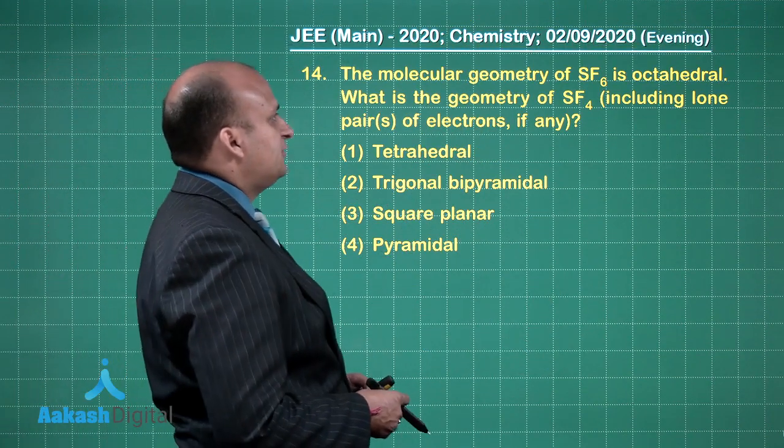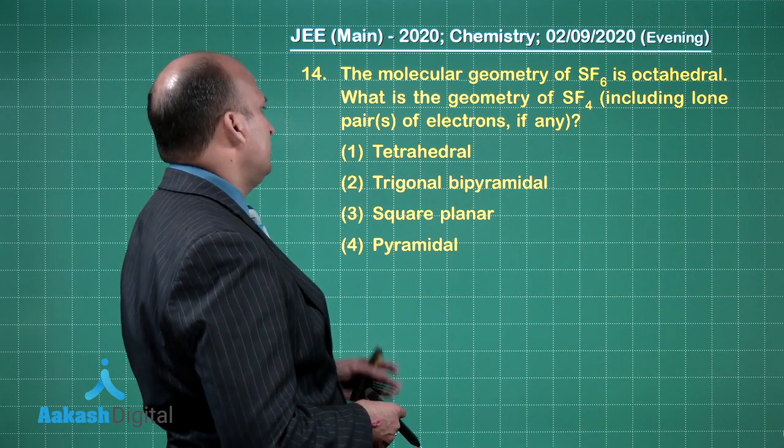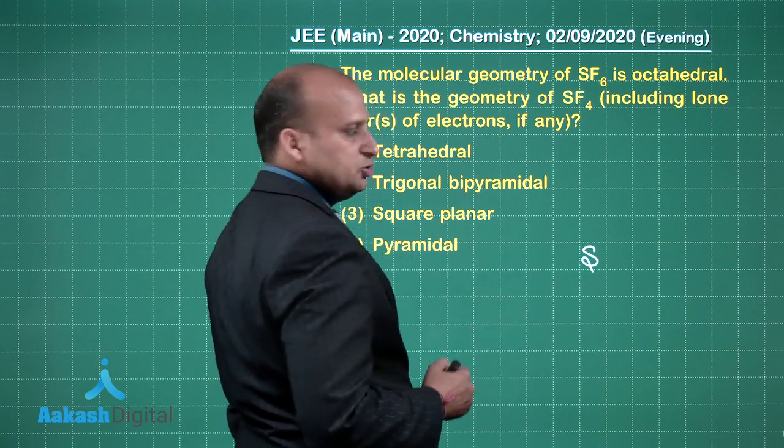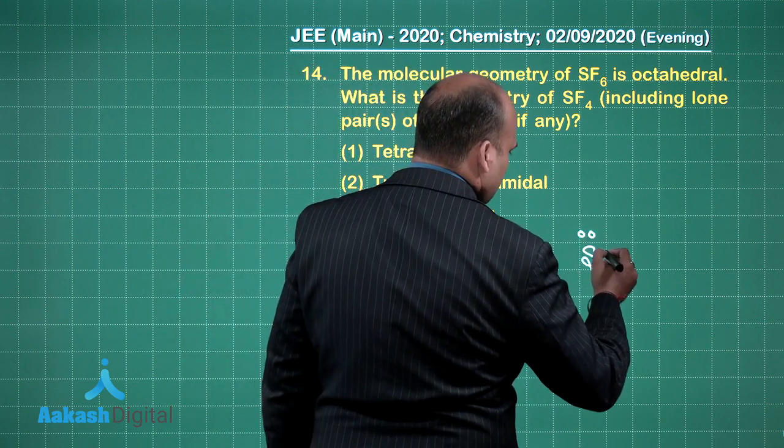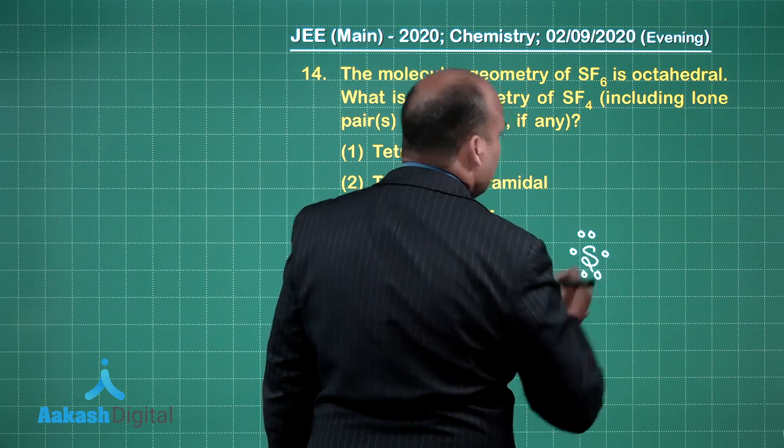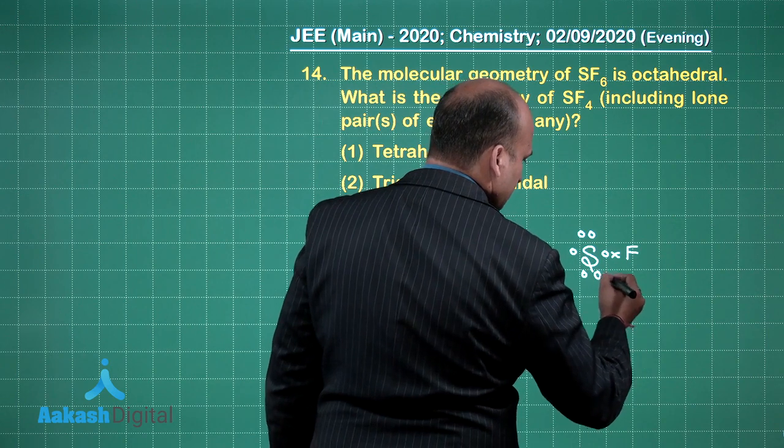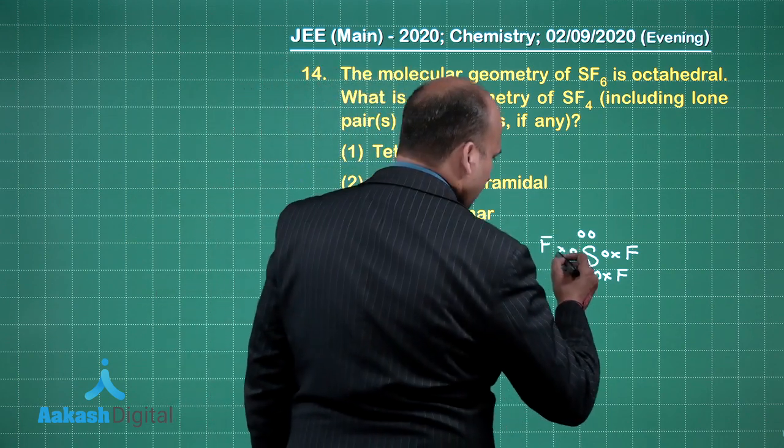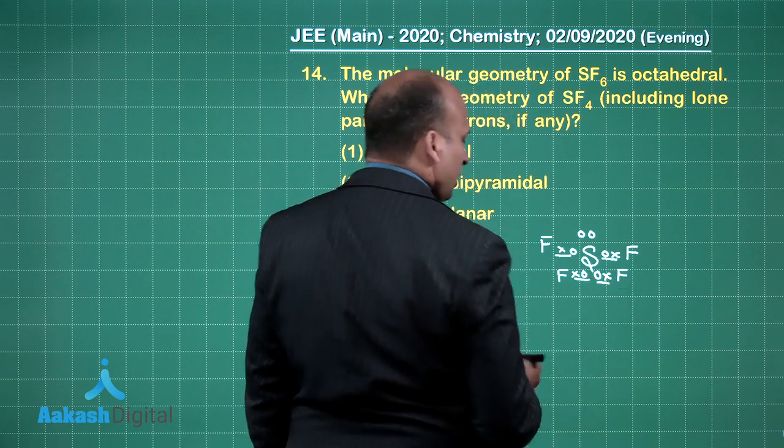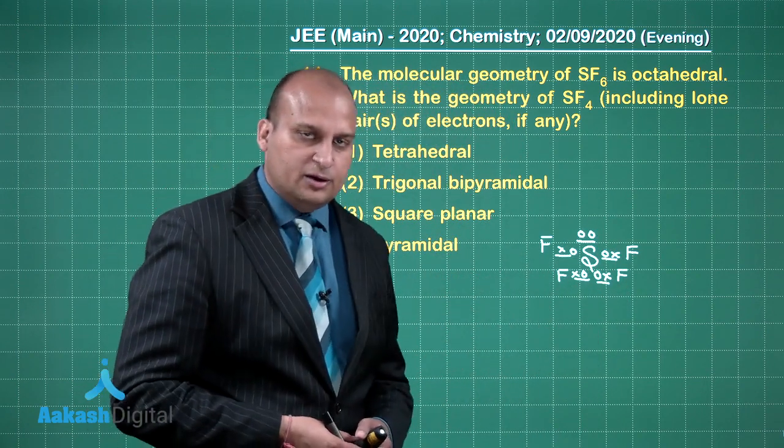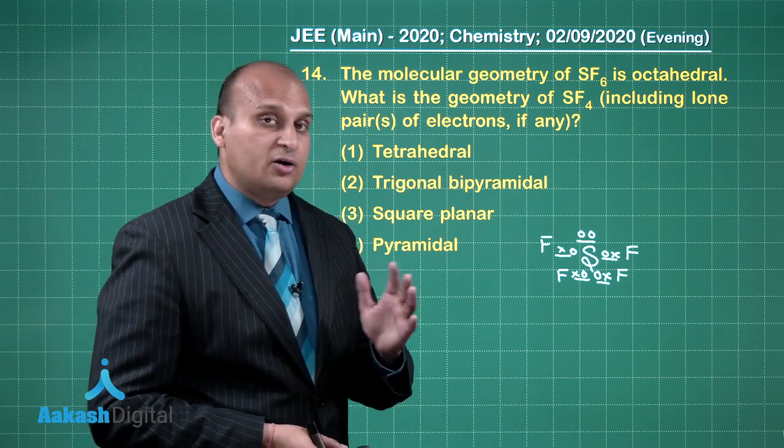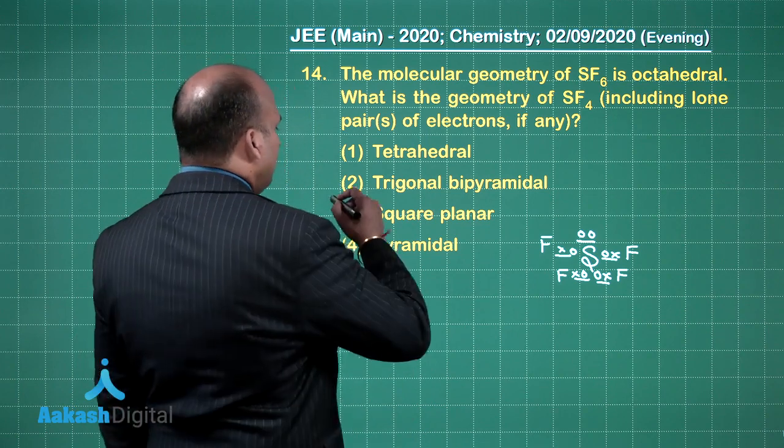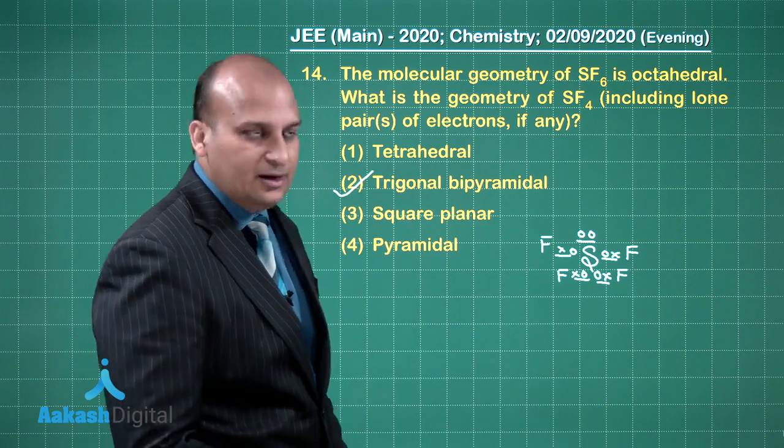The molecular geometry of SF6 is octahedral. What is the geometry of SF4 including the lone pair of electrons if any? Sulfur is having 6 electrons in the outer orbitals. And it is bonded to 4 fluorine atoms. How many bond pairs you are seeing? 1, 2, 3, 4. How many lone pairs? 1. 4 bond pair, 1 lone pair. So total number of electron pairs is 5. According to VSEPR, the hybridization should be SP3D. And in such a case, the geometry would be trigonal bipyramidal.